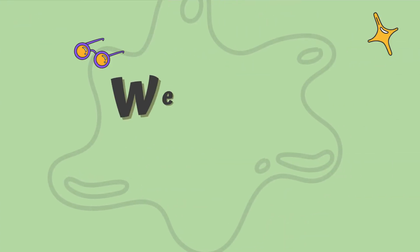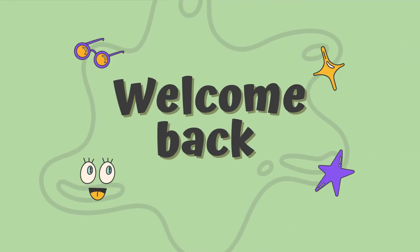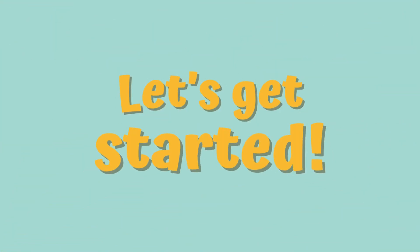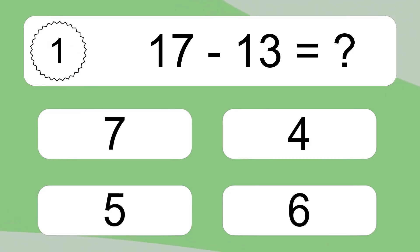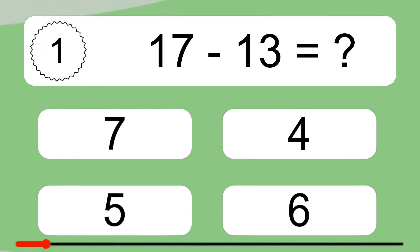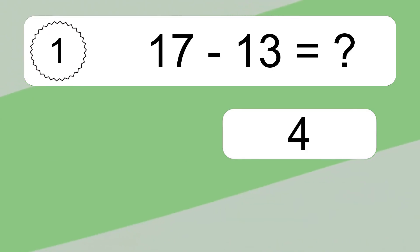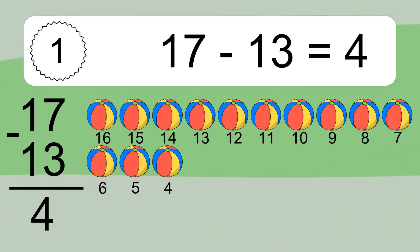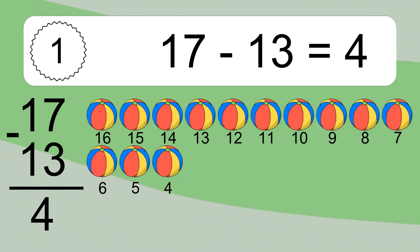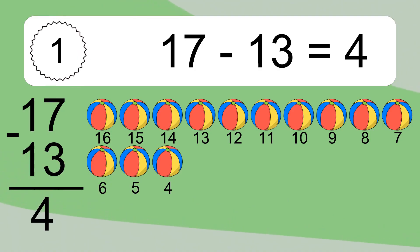Hey and welcome to a new video. Get ready to tackle fun challenges and test your skills. Let's get started. 17 minus 13 equals what? 17 minus 13 equals 4. Let's count it: 16, 15, 14, 13, 12, 11, 10, 9, 8, 7, 6, 5, 4.